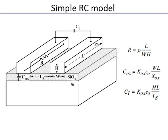For a wire of length L, height H, and width W, the cross-sectional area is W times H, so resistance R = ρL / (WH). The capacitance C_ox here refers to the vertical capacitance between the metal and the bottom plate: C_ox = ε_ox × WL / X_ox, where ε_ox = K_ox × ε_0, K_ox is the relative permittivity, and ε_0 is the permittivity of vacuum.